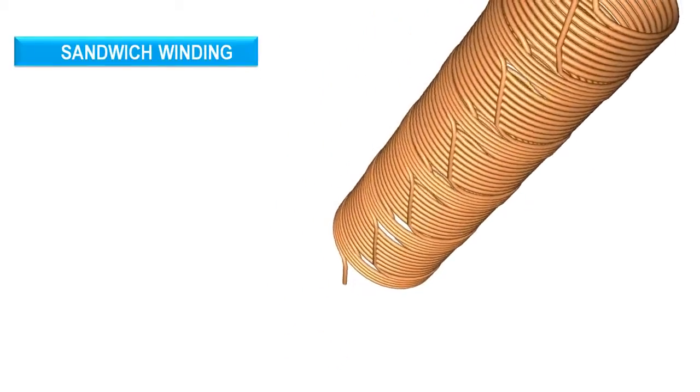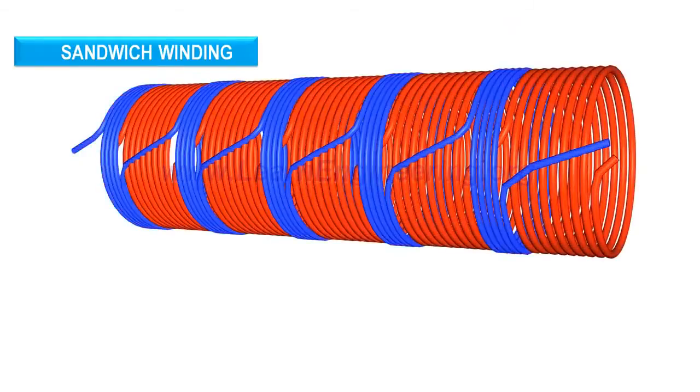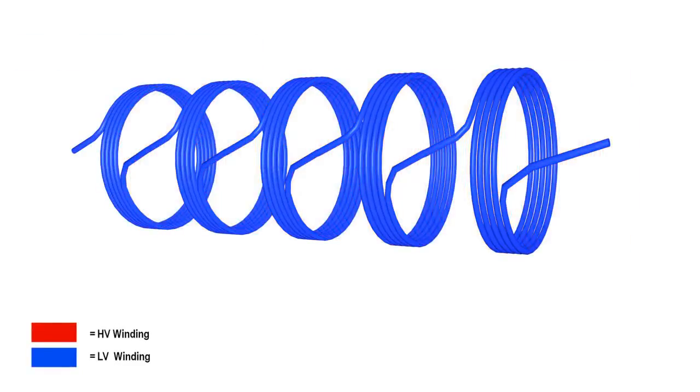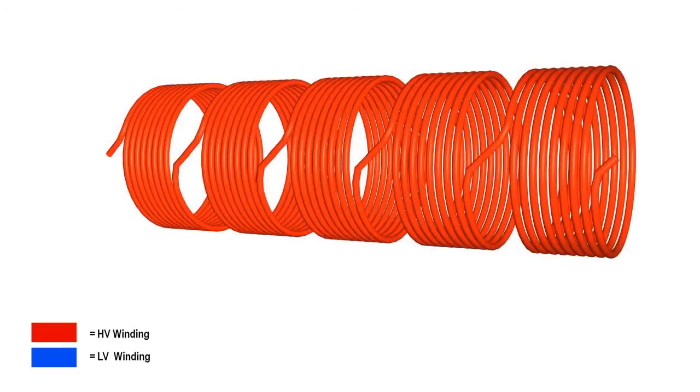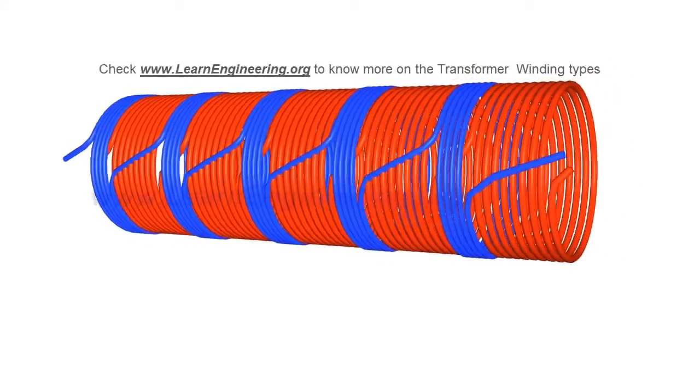Sandwich windings use a unique configuration. Here, high voltage and low voltage windings sit in the same magnetic axis, and each high voltage unit lies between two low voltage units. Thus, the leakage flux is greatly reduced.